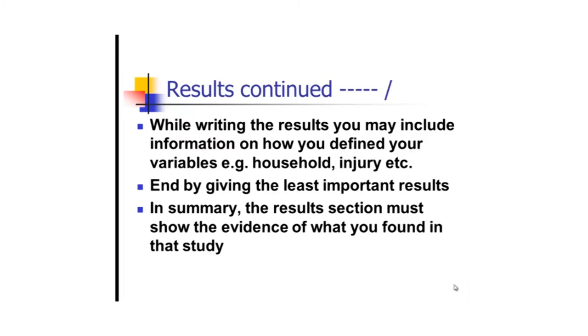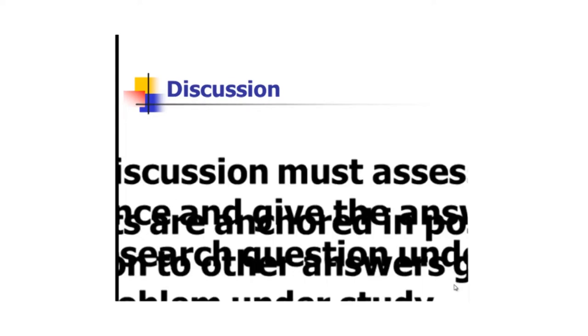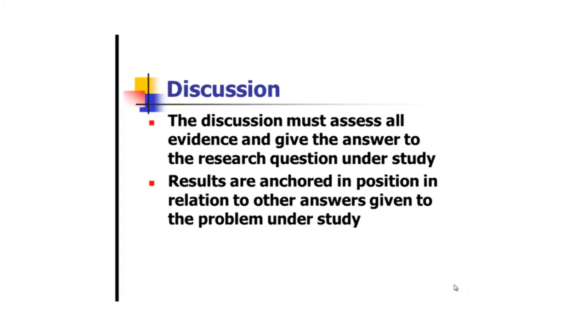After you have gone through the results, you may wish to go to the discussion. The purpose of the discussion is to relate your findings to the knowledge that exists. The discussion must assess all evidence and give the answer to the research question under study. In most circumstances, the discussion starts by echoing the results, the main findings. In this study, we have found out that there is no relationship between cigarette smoking and diabetes mellitus among people aged 35 to 45 years. You start by echoing the main findings, then you start relating your findings to the existing body of knowledge. In the discussion, you will find that people will be referring to what other people thought so you can see whether your work has made any contribution or maybe it didn't.